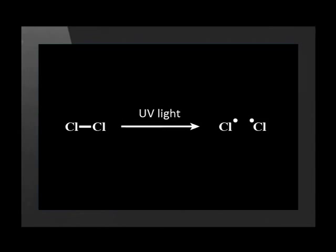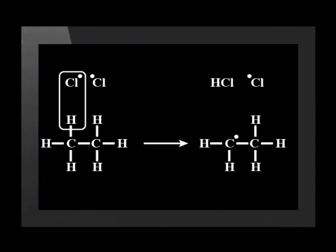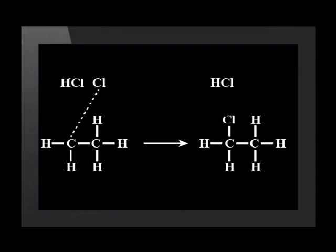This means that substitution of hydrogen atoms with halogens needs the energy from UV light for the reaction to occur. When ultraviolet light, or UV, is used, the chlorine atoms break apart. This makes it easier for them to replace one of the hydrogen atoms and make hydrogen chloride as one product. Once that happens, the remaining chlorine and carbon atoms bond, making the product chloroethane.